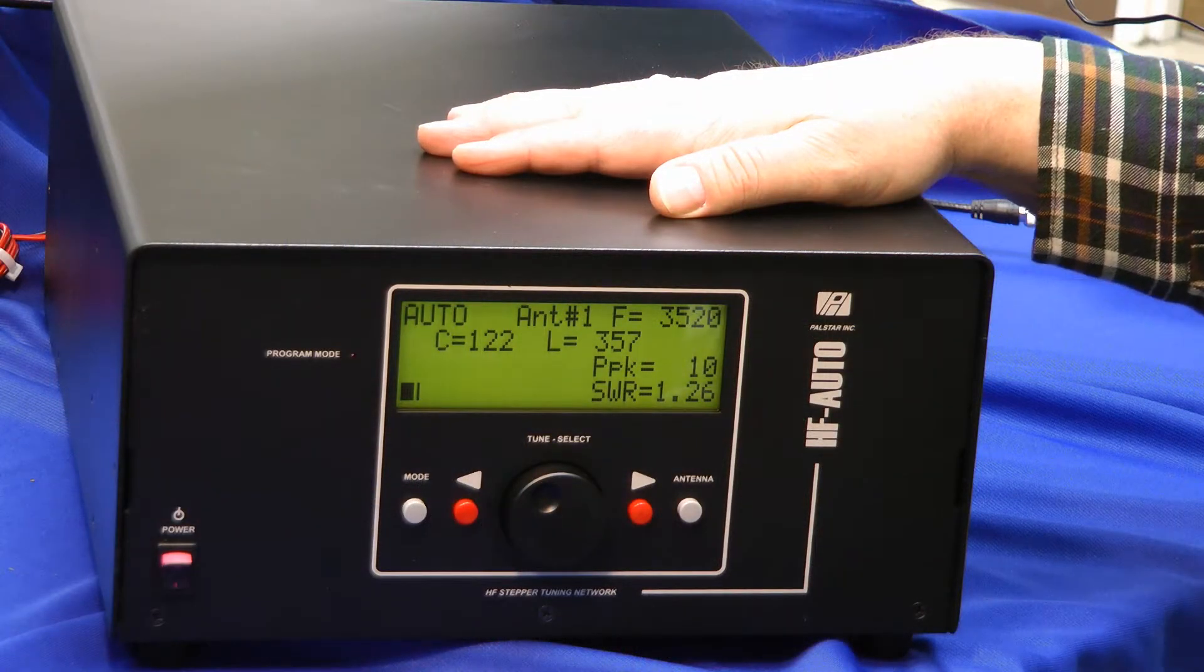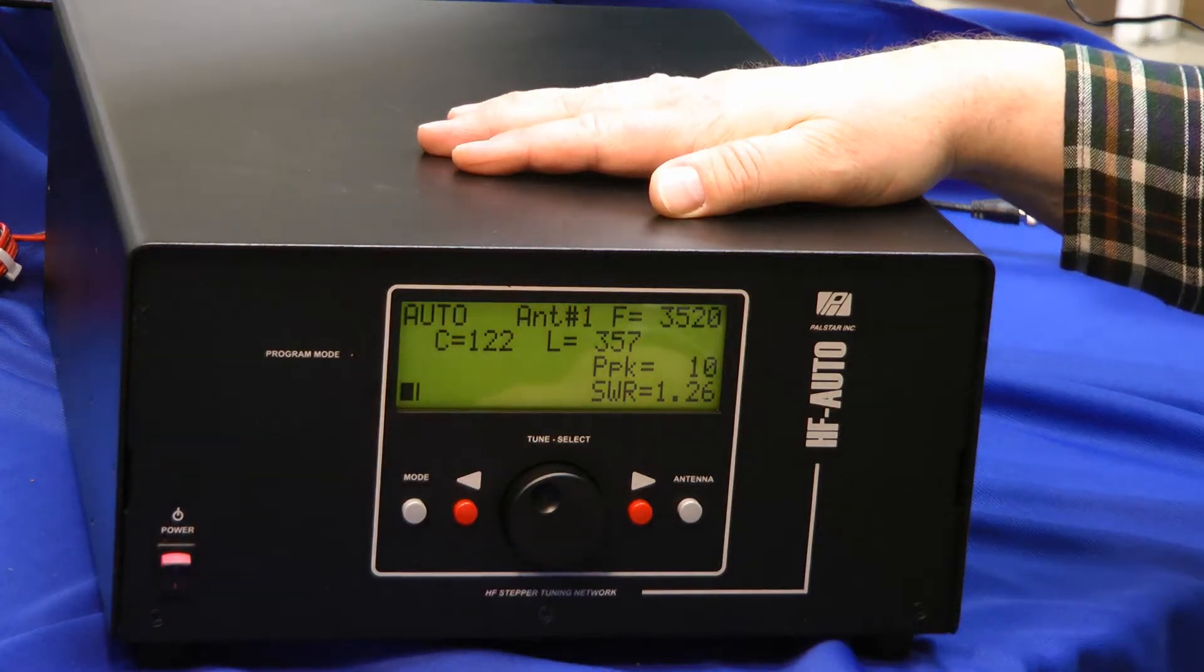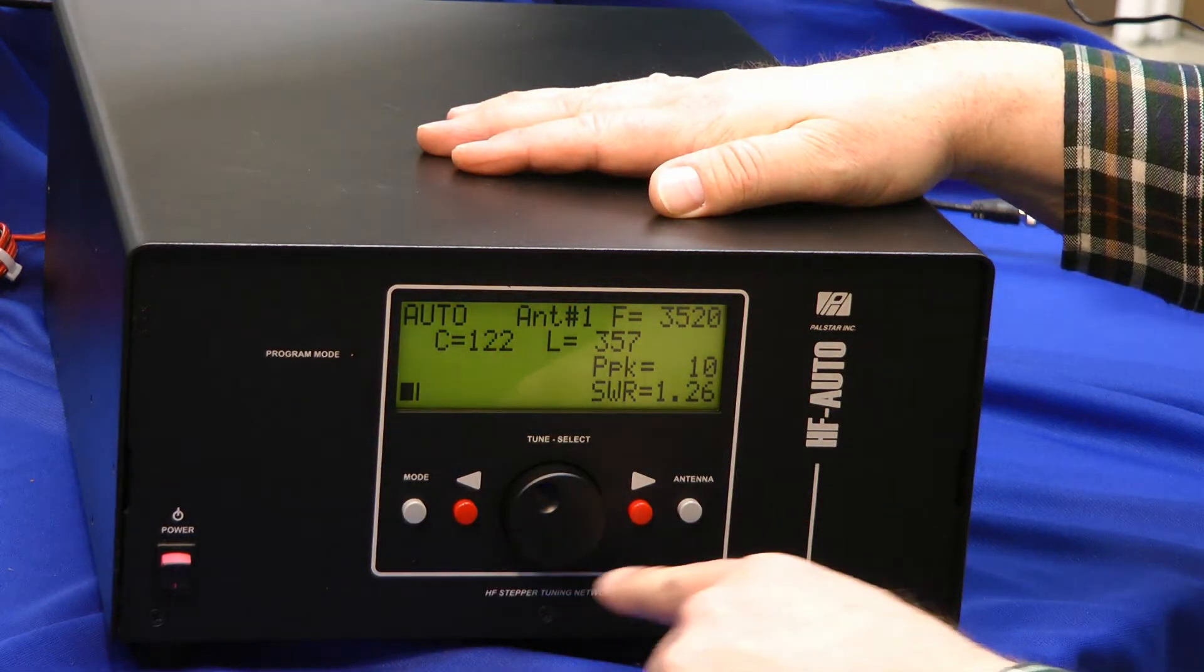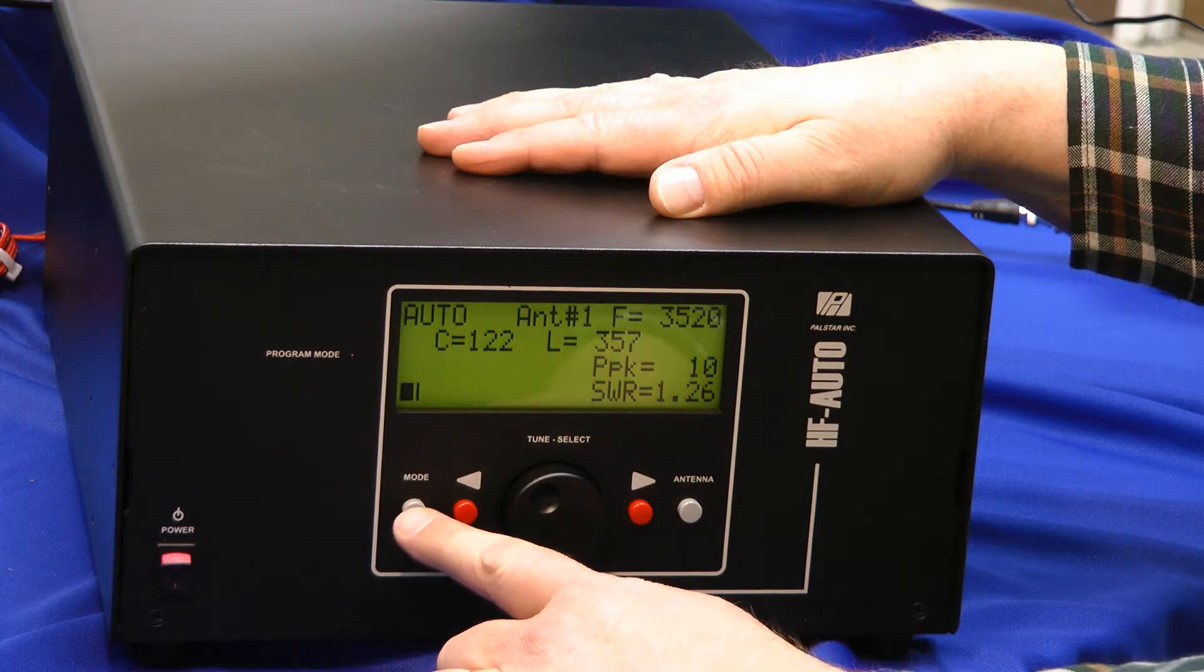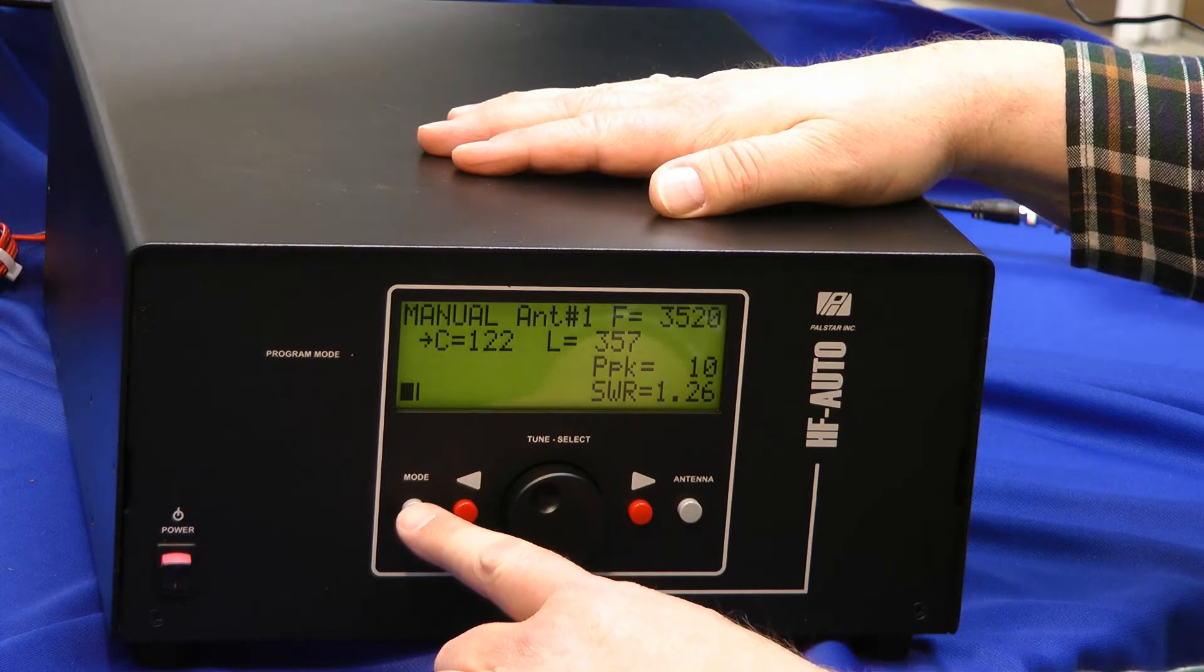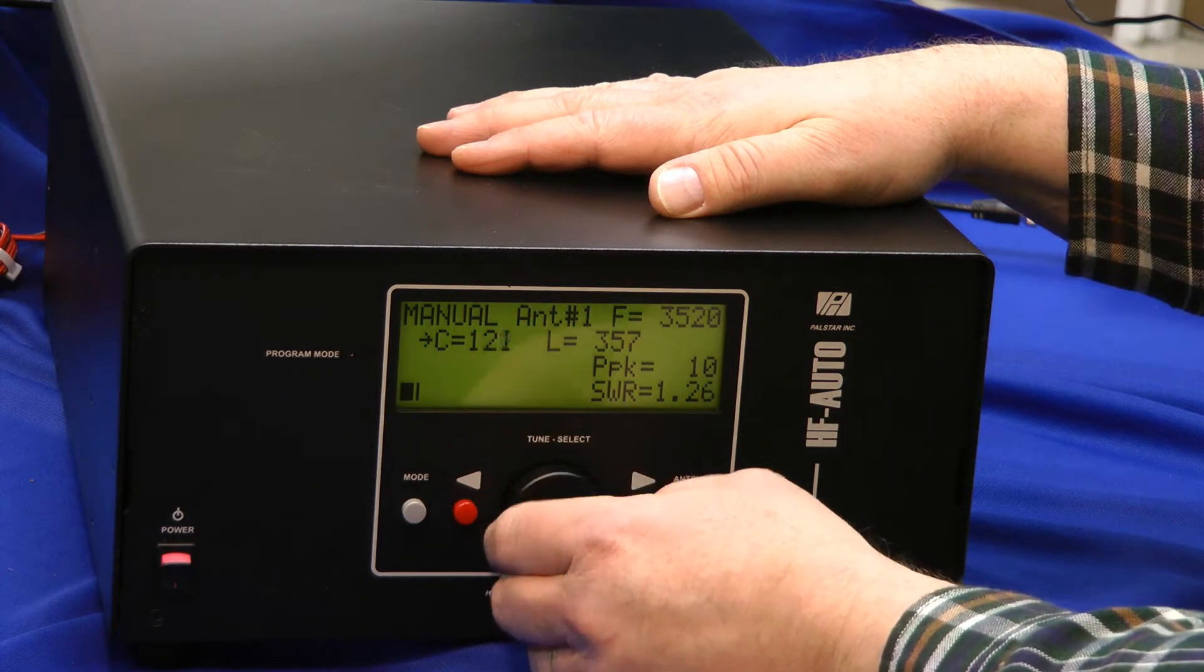This is a fully automatic 1500 watt antenna tuner. Power button's here. We have very simple controls on the front. This is your mode button. I'm in the auto mode now. Now I'm in the manual mode. I can actually adjust the capacitor and the inductor by turning this knob. Hear that?